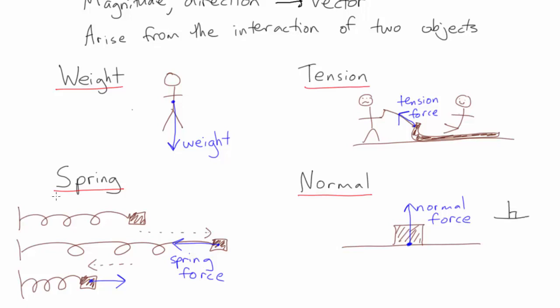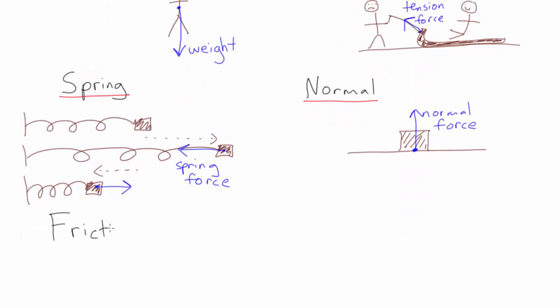The force of friction opposes the motion, or the attempted motion, of an object, and is parallel to the contact surface between two objects. If an object is moving, then the force on it is called kinetic friction. For example, a puck on ice slows down to a stop due to kinetic friction.